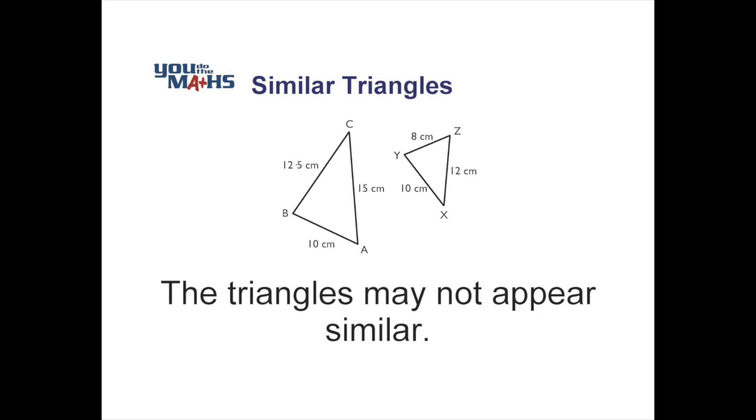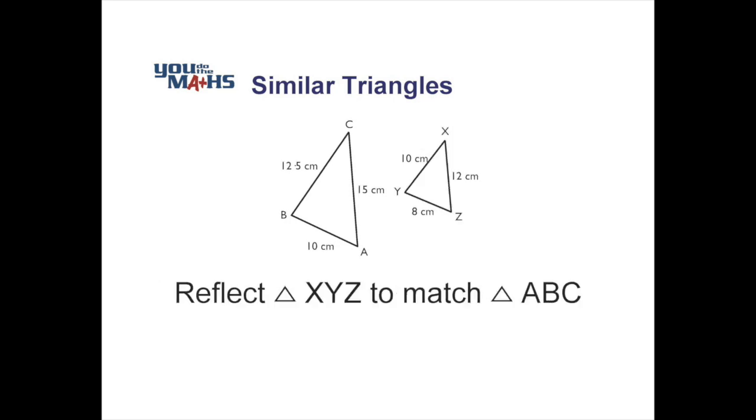So we need to flip triangle XYZ, or basically reflect it about a horizontal line. When we do that, we can now see that YZ, the smallest side at 8cm, is in a similar position to where AB is.